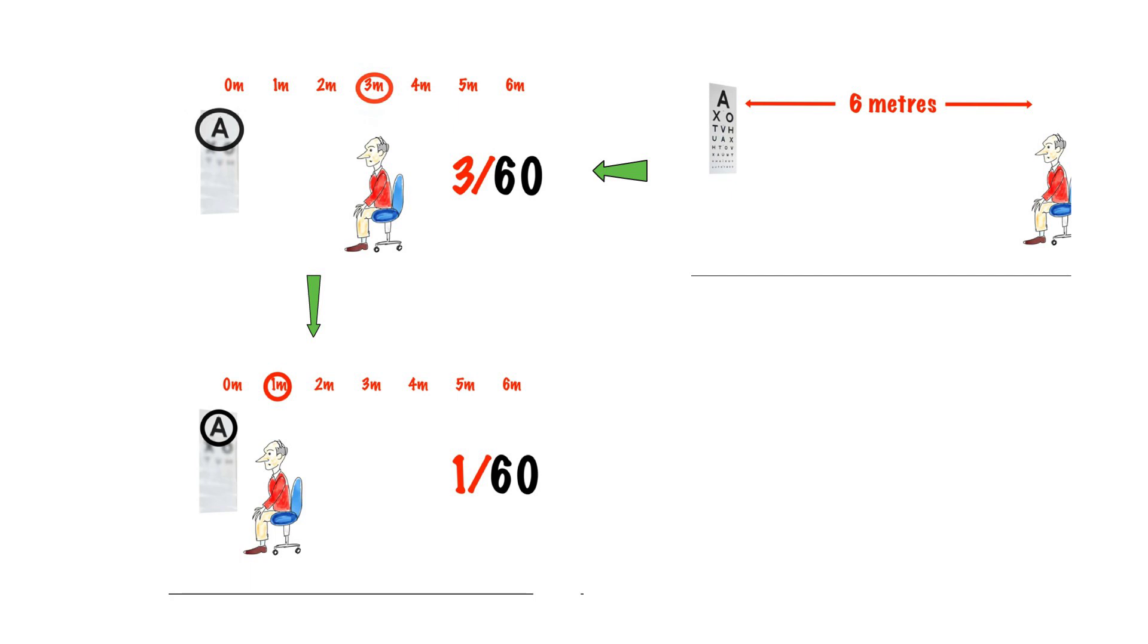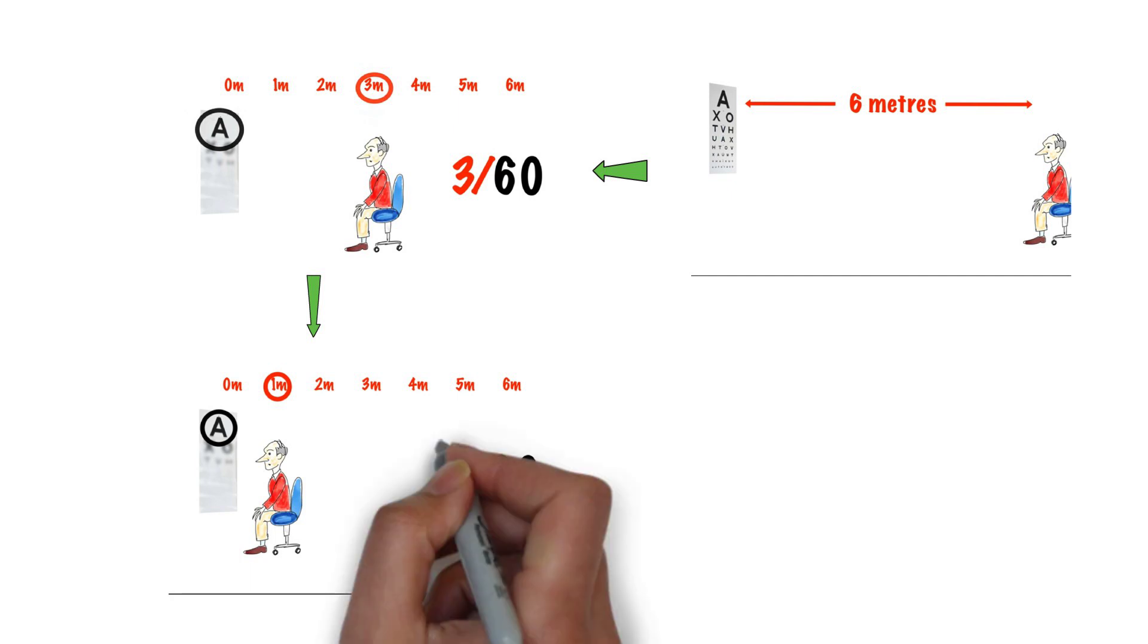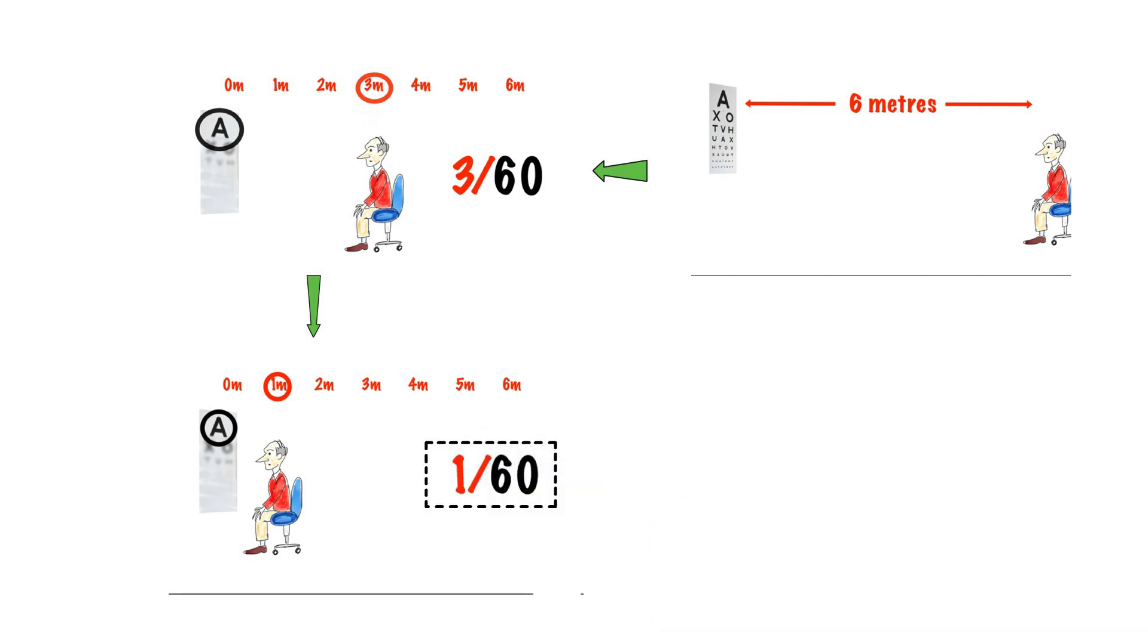But if he cannot read from 1 meter, we cannot move him further because distance can only be measured in meters. Therefore, minimum visual acuity that can be measured from Snellen's test is 1 by 60. Also, vision less than 3 by 60 is considered blindness both according to India and WHO.